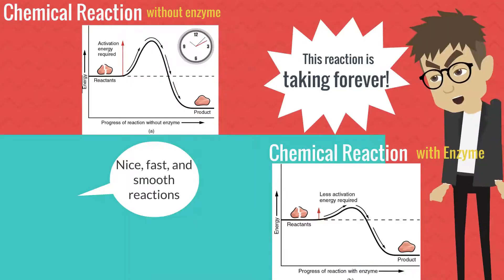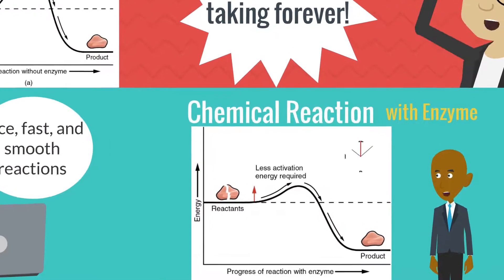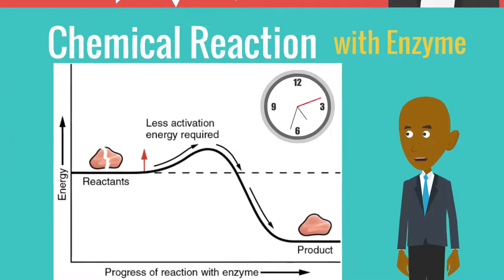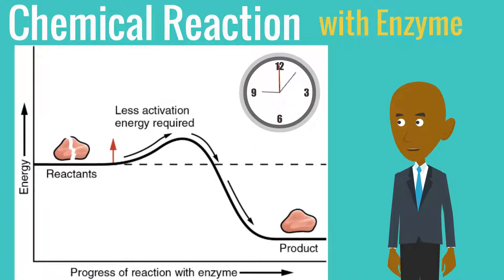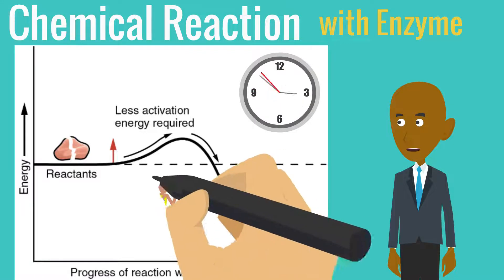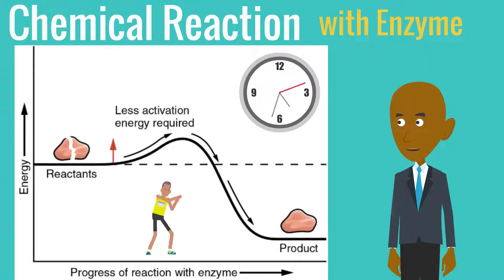Now let's take a look at a chemical reaction with an enzyme. Notice that the amount of activation energy required to convert reactants into products is much faster since there is an enzyme present. Enzymes act as catalysts that speed up chemical reactions by lowering the amount of activation energy required for the reaction to occur. This causes many processes in the body to go much smoother.